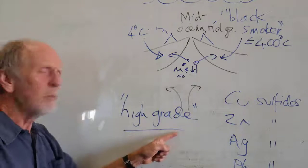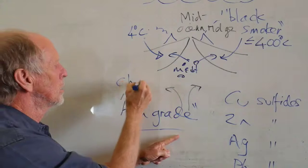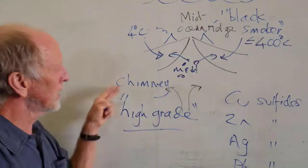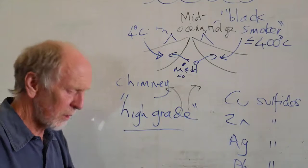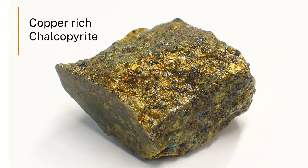In these chimneys around the black smokers—so the chimney is the structure out of which the fluid is coming—in the chimneys, high grade copper, zinc, silver, lead sulfides. And by high grade, I mean up to 38 percent. So they glisten, you can see the sulfides in these things.